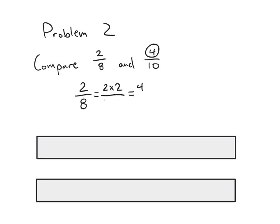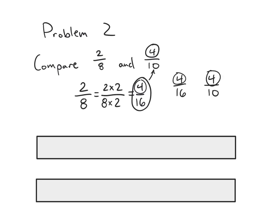Since I want an equivalent fraction, I also multiply the denominator by two, giving me four-sixteenths. Now comparing four-sixteenths and four-tenths, it's the same number of units — four and four. Sixteenths are much smaller than tenths because I'm splitting into sixteen equal pieces versus ten. Since both have four in the numerator, four-tenths is larger than four-sixteenths, so two-eighths is less than four-tenths.